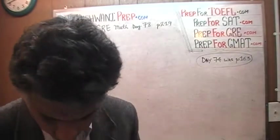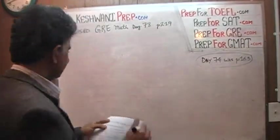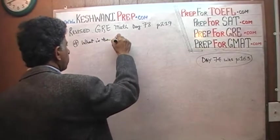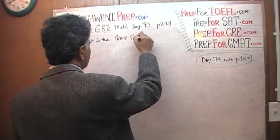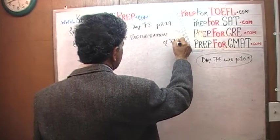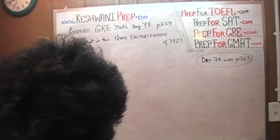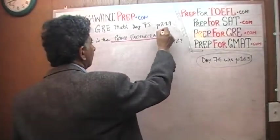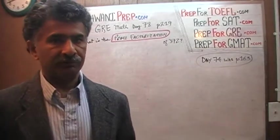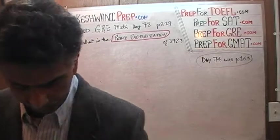We are at problem number 4. It says what is the prime factorization of 372? What does prime factorization mean? It means exactly what it says. We have to find all of its prime factors, not all the factors, but the prime factors. The factors of 372 which are prime numbers.